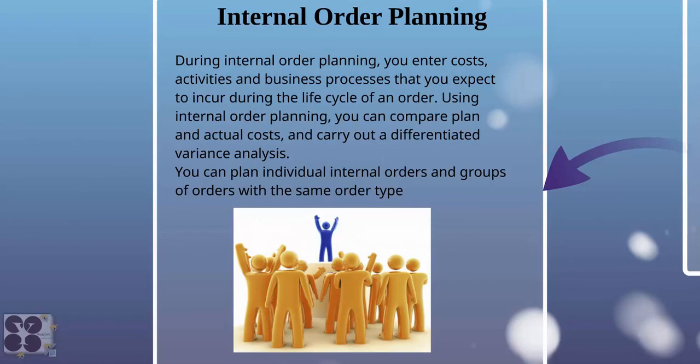Internal order planning. As discussed in the master data and basic lectures, an internal order is a tool or internal project for a specific purpose. In this planning, you enter costs, activities, and business processes that you expect to incur during the life cycle of an order. For example, if there is an advertisement campaign anticipated to remain active for three years, you plan the cost each year — 2015, 2016, and 2017 — three years ahead of time for that particular order or project.